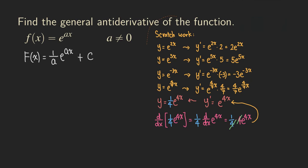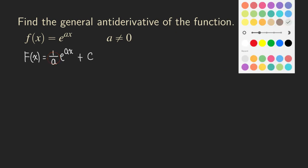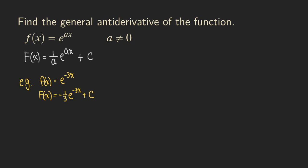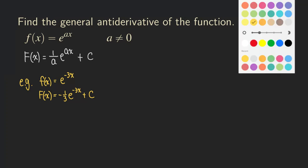Let's do a few examples. First example: the function is e to the negative 3x. What is its antiderivative? According to the formula, we copy the function — e to the negative 3x — and then multiply by the reciprocal of a, which is negative 3. So we multiply by negative 1 over 3, giving us negative 1 over 3 times e to the negative 3x, plus C.